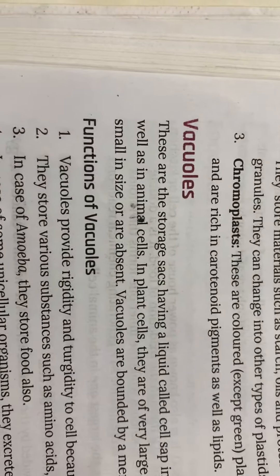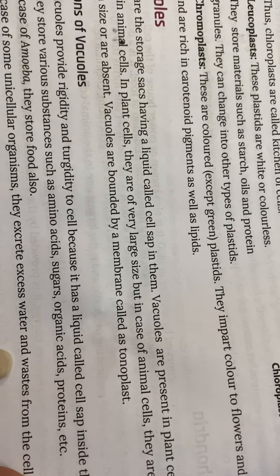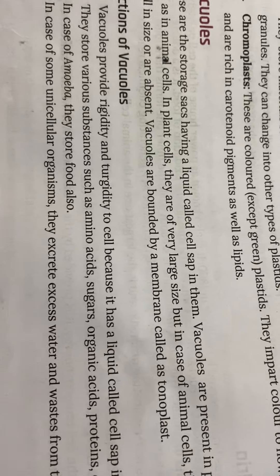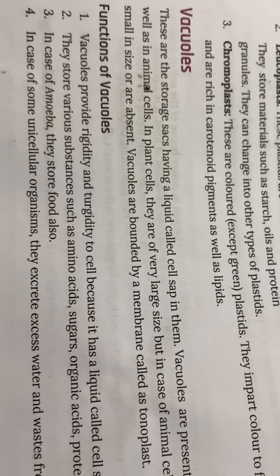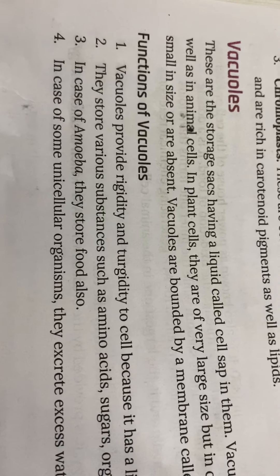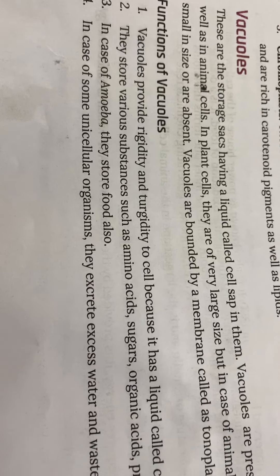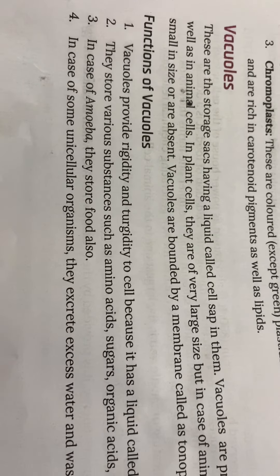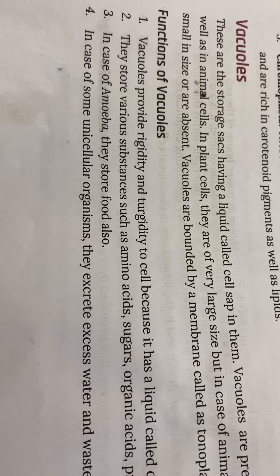The next organelle is vacuoles, which are storage sacs. They are present in both plant cells and animal cells. In plant cells, vacuoles are large in size, whereas in animal cells they are small and sometimes even absent. Vacuoles are bounded by a membrane called the tonoplast. Their functions include providing rigidity and turgidity to the cell, and removing water and waste from the cell. They store various substances such as amino acids, sugar, organic acids, and proteins, which can be utilized when needed by the cell.